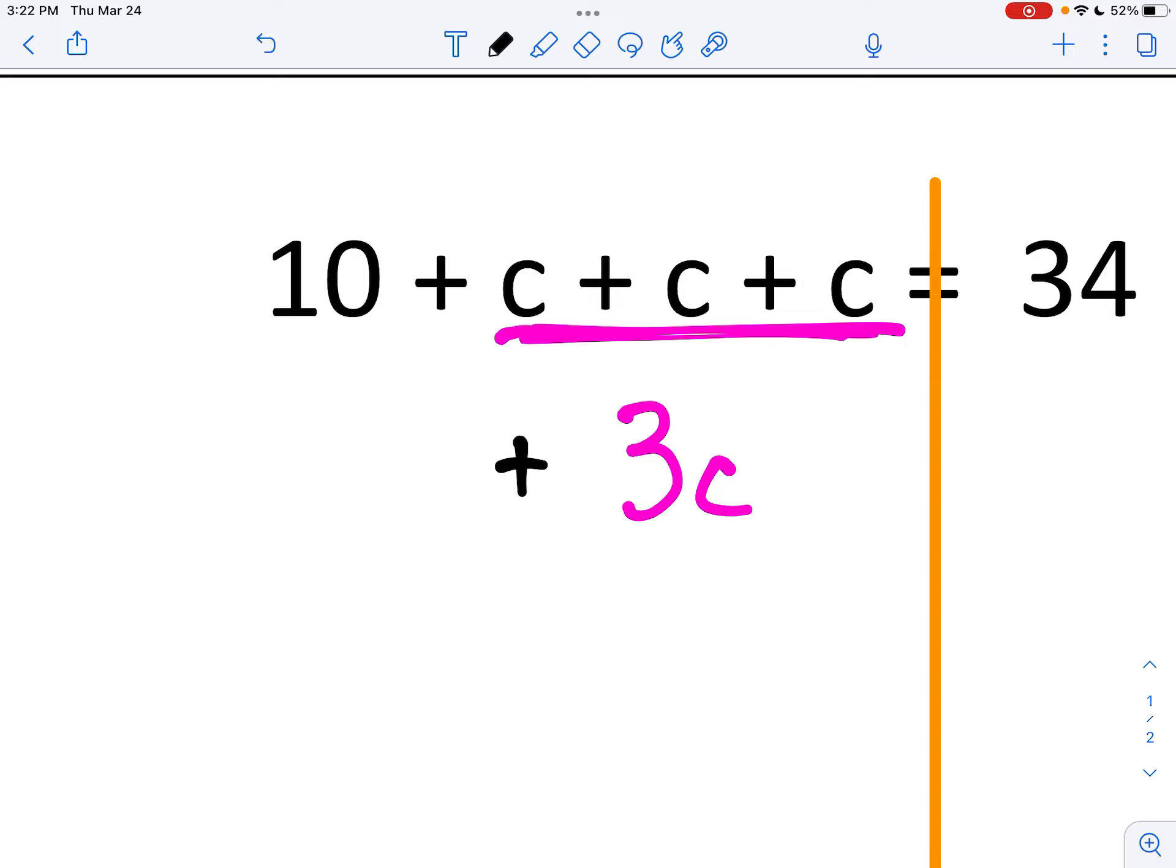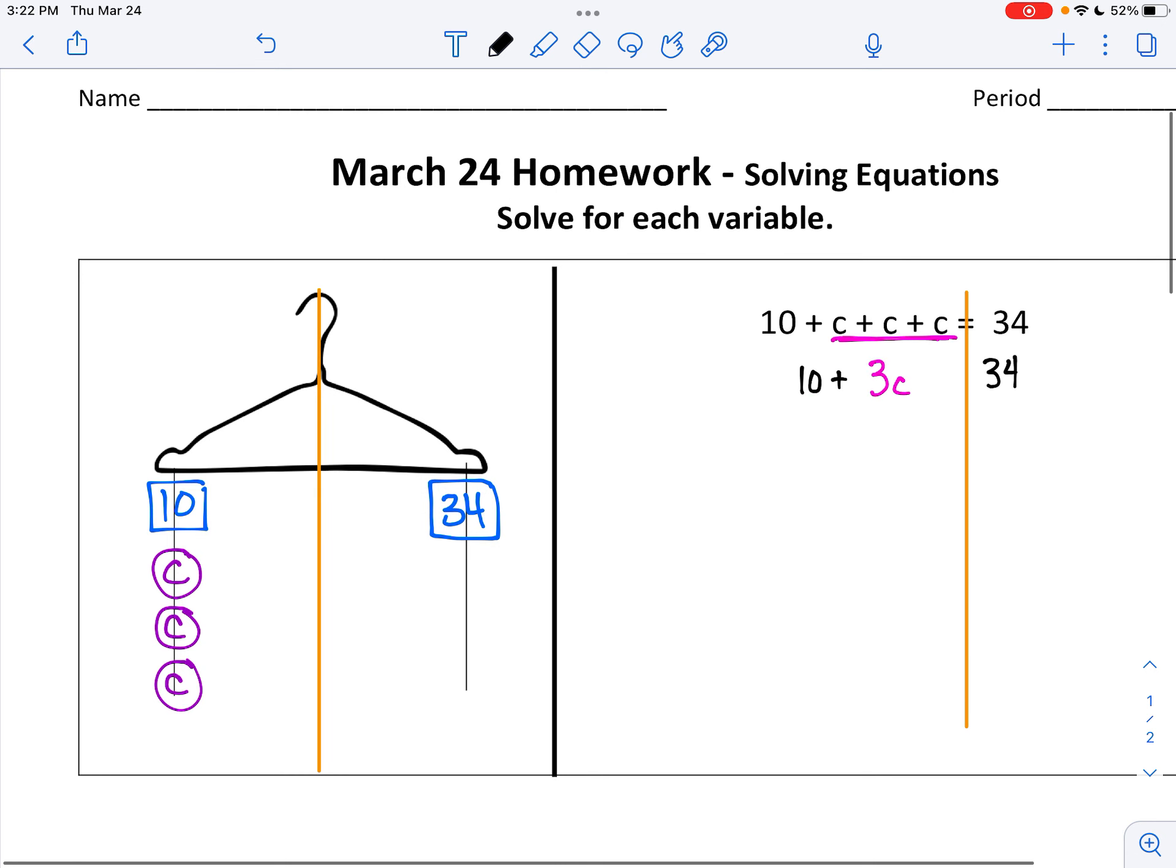Then I'm going to keep everything else. 10 plus, and on the other side is 34. There is 10 plus three C's on the left, and on the right there's 34.